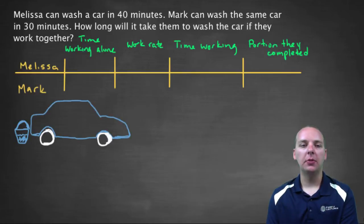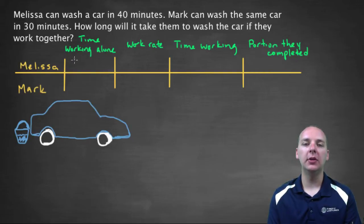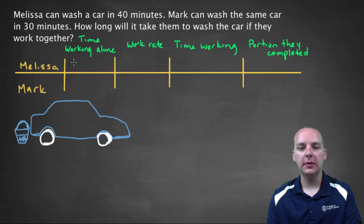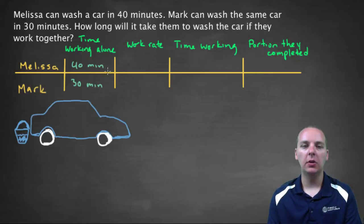So here's the chart I was talking about. So you're going to make a chart with two rows in it, one for Melissa, one for Mark, and then we have some information we need to know about Melissa and Mark. So, first up, how long would it take them to work just by themselves, so time working alone? Melissa is 40 minutes, and Mark is 30 minutes, right, clear enough?